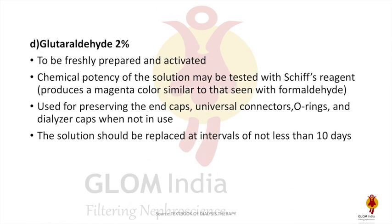Another agent is glutaraldehyde 2% or Cidex. It needs to be prepared freshly and must be in active form. Its potency can be checked by Schiff's reagent, which will produce a magenta color. Similarly, like formaldehyde, it is used to preserve end caps, universal connectors, O-rings, and dialysis caps when not in use.